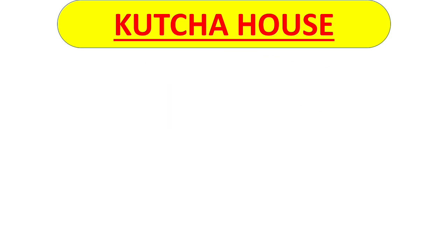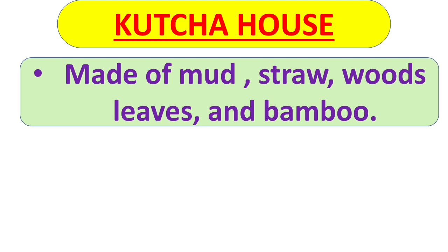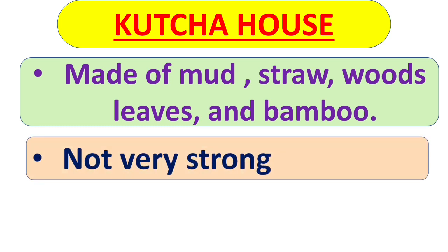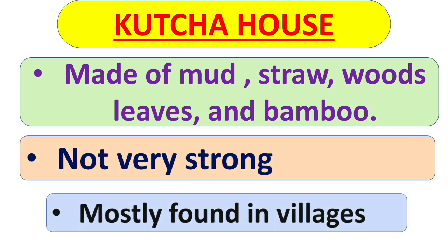So first we will learn about Kaccha house. Kaccha houses are made up of mud, straw, woods, leaves and bamboo. Kaccha houses are not very strong, and they are mostly found in villages.